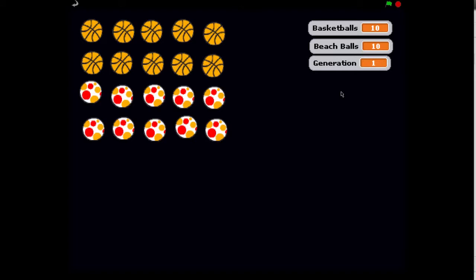Now for the second generation, we see a change to 12 basketballs and 8 beach balls. In the third generation, we have 11 basketballs and 9 beach balls.